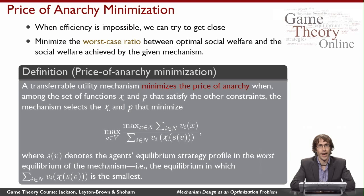Those are all of the constraints and objective functions defined today. Overall, you can imagine listing them all and having an optimization problem that says: find the x and p that maximize or minimize whatever objective function you care about, subject to various constraints on how x and p work — things like budget balance, individual rationality, truthfulness, and so on.